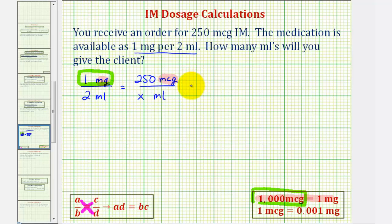This gives us the proportion 1,000 micrograms per two milliliters equals 250 micrograms to X milliliters. Now notice how we have the same units on top and the same units on the bottom.